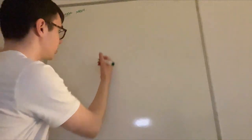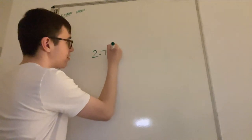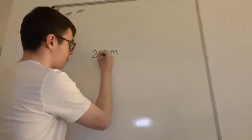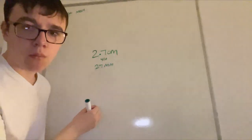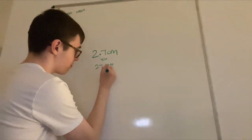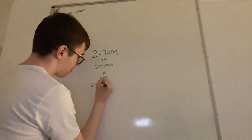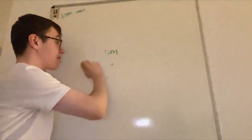Unit conversions: 2.7 centimetres - to get to millimetres, multiply by 10 to get 27mm. To get to micrometres, multiply by 1000. Barely anyone remembers that, but you could be missing out on five marks in an exam because of it.